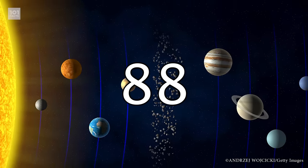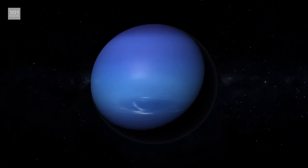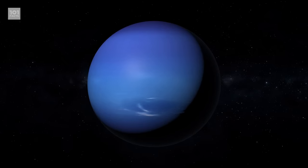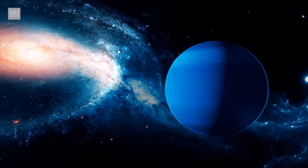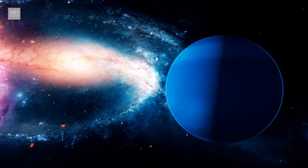A day on Neptune is about 16 hours. However, a year on Neptune is about the same as 165 years on Earth. In fact, it wasn't until 2011 that Neptune had completed its first solar orbit since we discovered it in 1846.